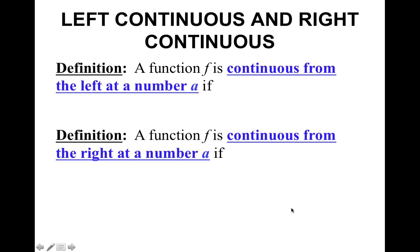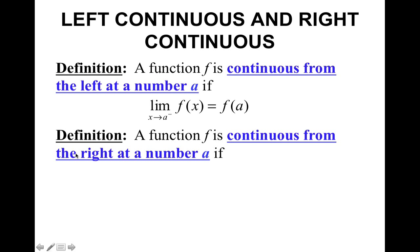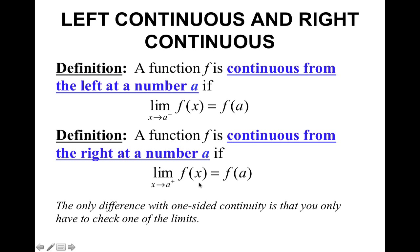It is possible to have a one-sided continuity — a function can be continuous just from the left or just from the right. For a function to be continuous from the left, the limit as x approaches a from the left of f of x equals f of a, and vice versa for the right. The only difference with one-sided continuity is that you only have to check one of the limits.